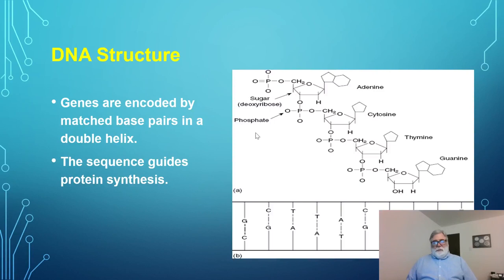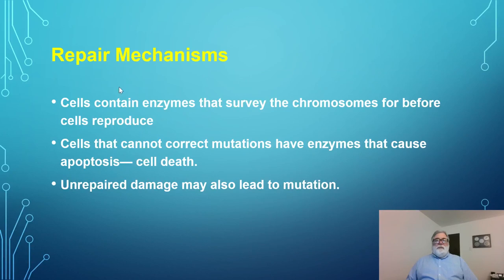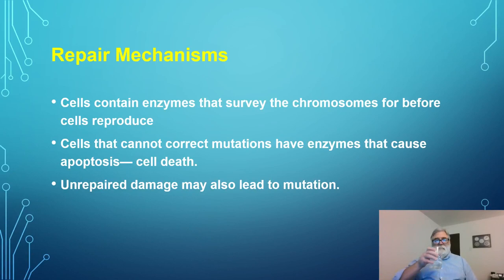That's important because that's where the most significant damage will occur in the cell. The cell has enzymes — which are themselves proteins — that during the cell cycle survey the DNA, check for any damage or errors, and correct them before the cell reproduces. Cells where a change is noted but can't be corrected have enzymes that cause apoptosis, which is cell death. So cells that cannot correct the genetic information stop so that they don't reproduce aberrant cells. However, if there's uncorrected damage that isn't recognized by the surveillance and repair mechanisms, that can lead to mutation.